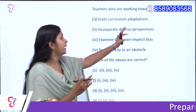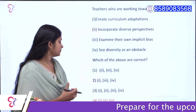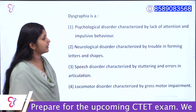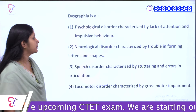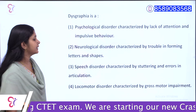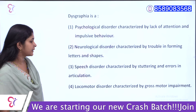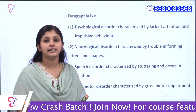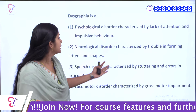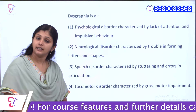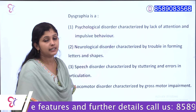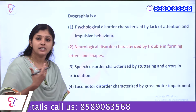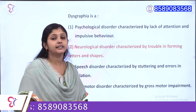Next question: Dysgraphia is — Option A: psychological disorder characterized by lack of attention and impulsive behavior. Option B: neurological disorder characterized by trouble forming letters and shapes. Option C: speech disorder characterized by stuttering and errors in articulation. Option D: locomotor disorder characterized by gross motor impairment. Dysgraphia involves difficulty writing letters and shapes, so the answer is Option B — neurological disorder characterized by trouble forming letters and shapes.